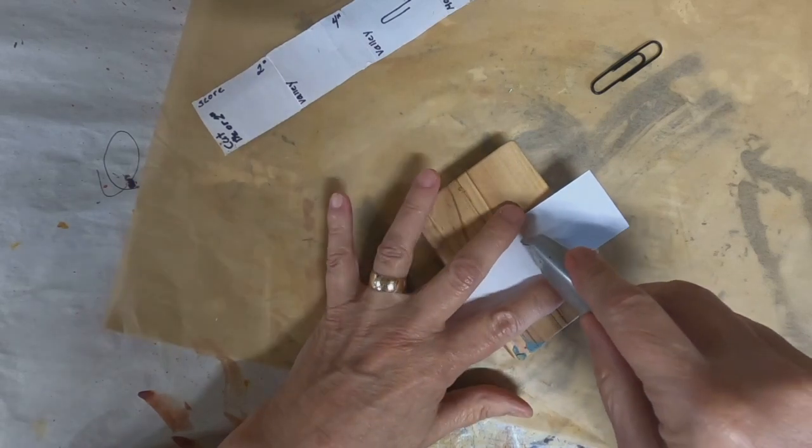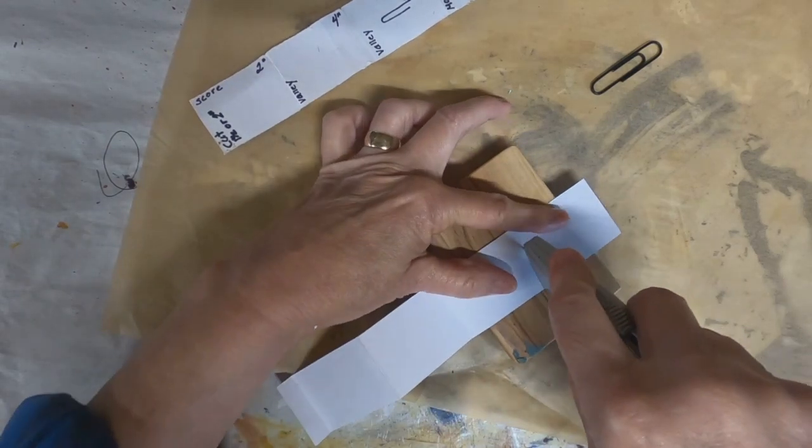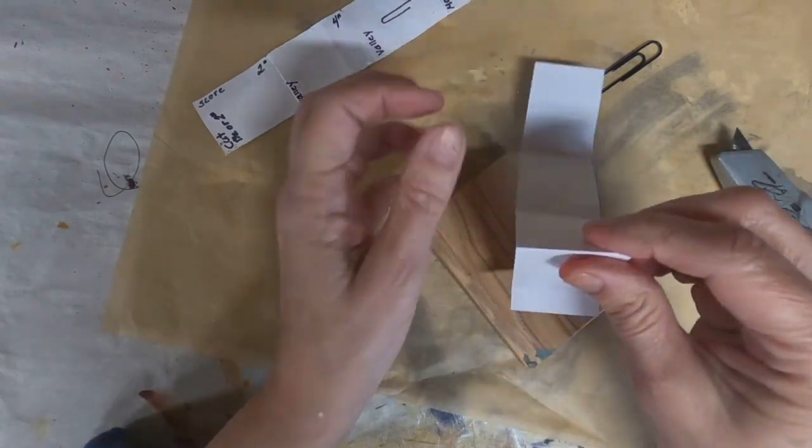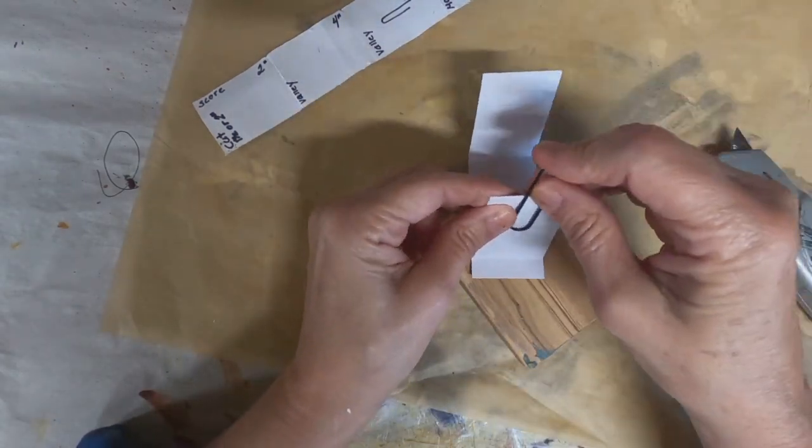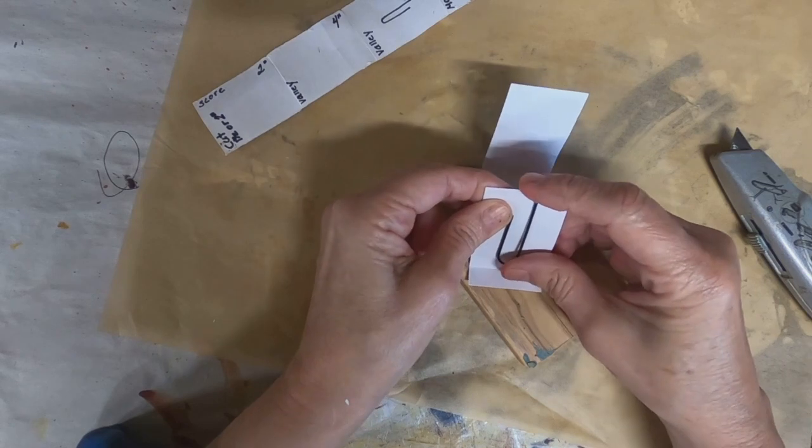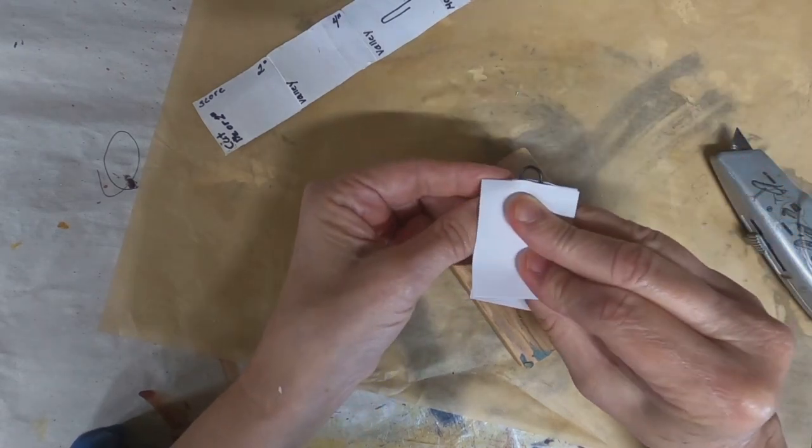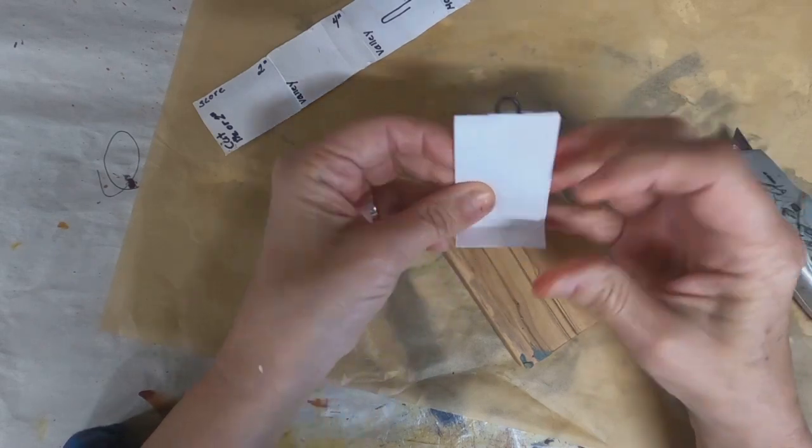Just want to define that fold. Now I'm just going to take my exacto and score a straight line. I'm going to put the paper clip back on.